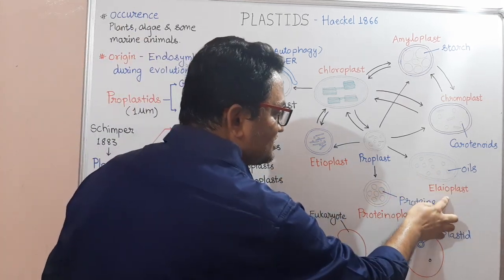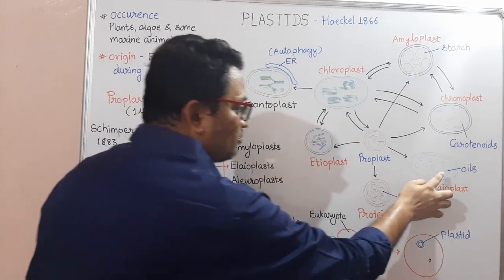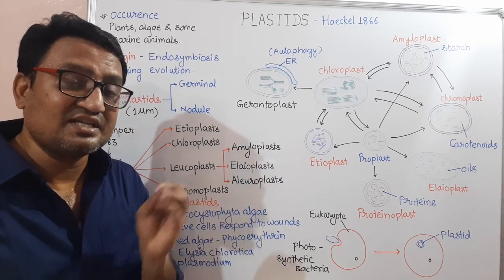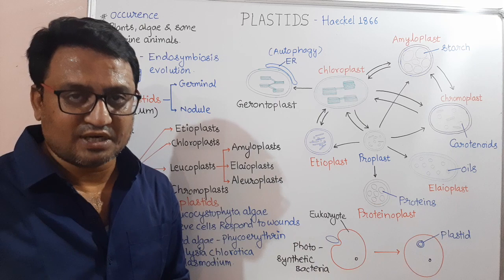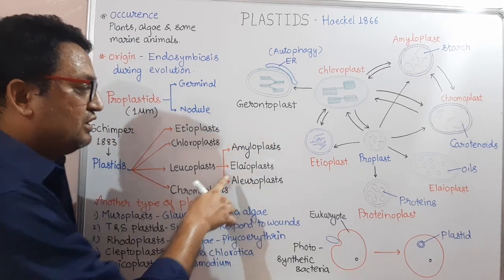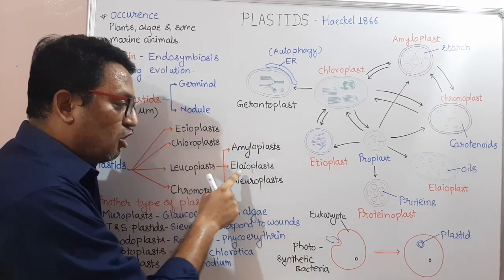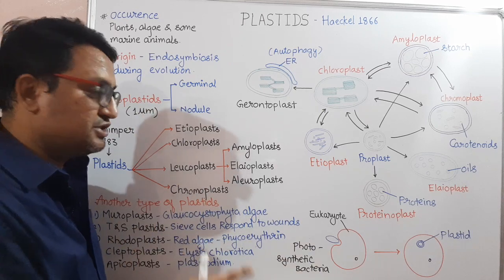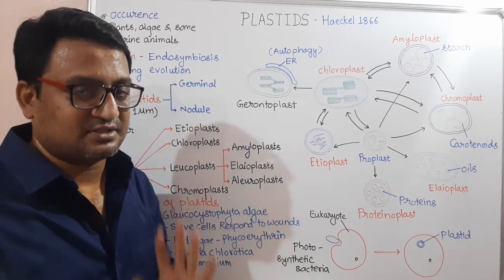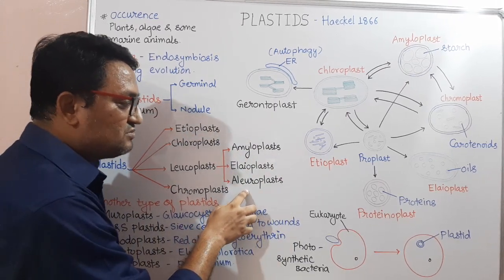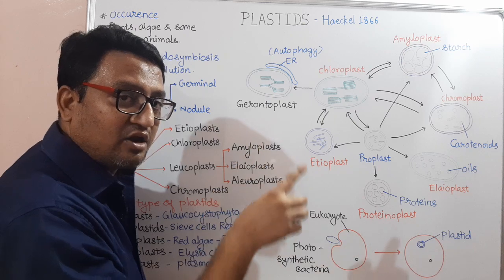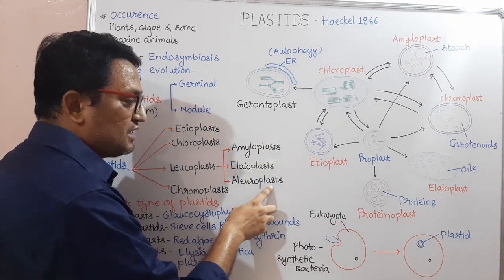The oil-storing Plastids are called Eleoplasts. These are present in oil seeds, in citrus, and in anthers of some flowering plants. Therefore, pollen maturation is one of the functions of Eleoplasts. So the two functions are: number one, oil storage; and number two, pollen maturation. As there is oil storage, Eleoplasts are also called Oleoplasts. The third type, Aleuroplasts, are present in the aleurone layer of maize grain, and are therefore termed Aleuroplasts.